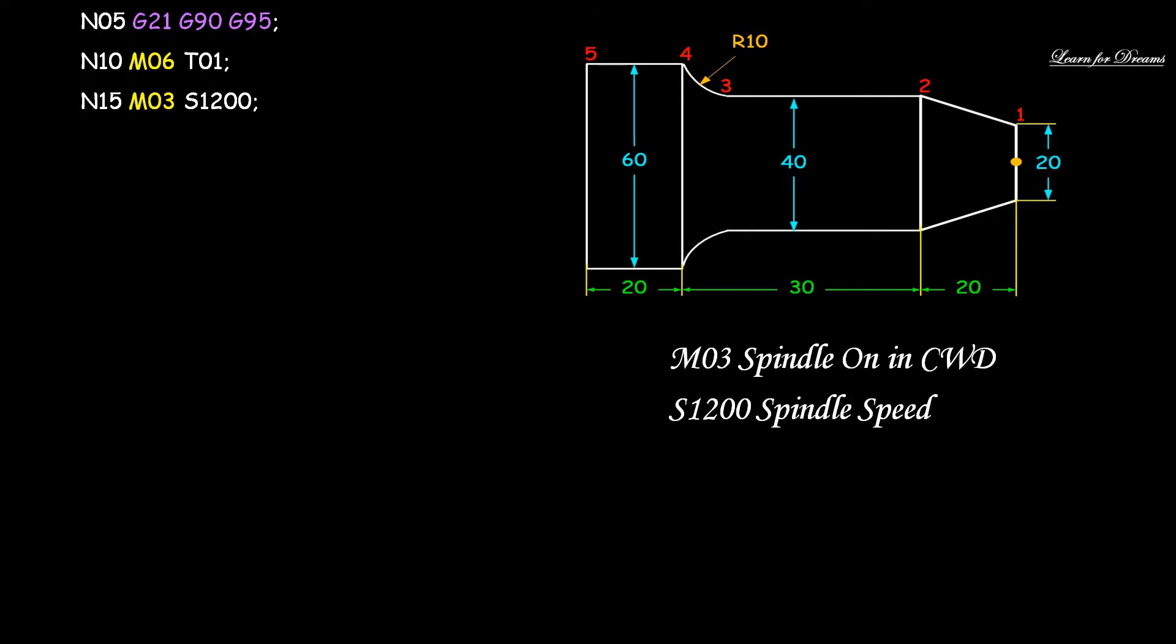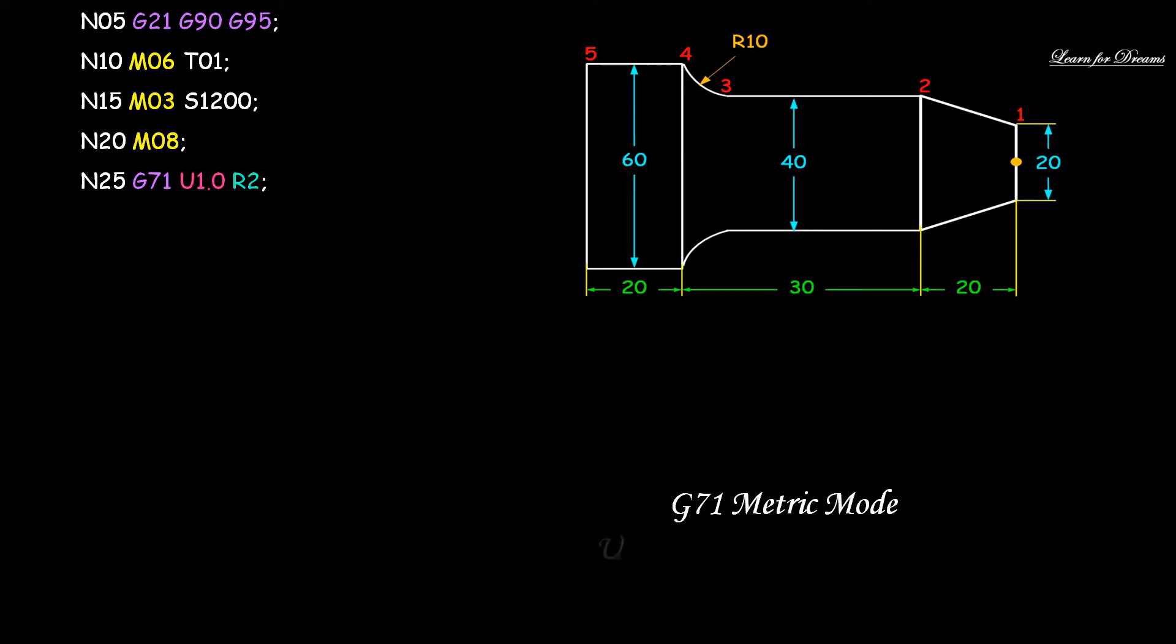Then N20 M08. M08 is coolant on. N25 G71 U1.0 R2. G71 is for metric mode, U is depth of cut of 1 mm, and R2 is retraction by distance 2 mm.